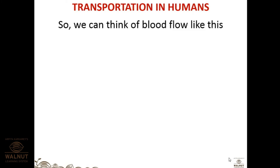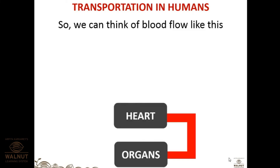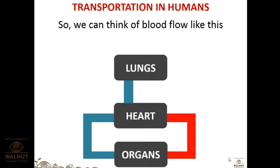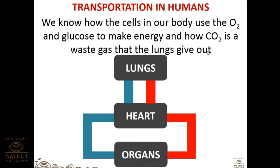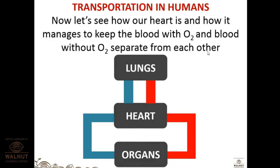Think of blood flow using a block diagram: heart, then organs. The red part represents blood with oxygen and the blue part represents blood without oxygen. Cells in our body use oxygen and glucose to make energy, and CO2 is a waste gas released by the lungs — as already seen in respiration.